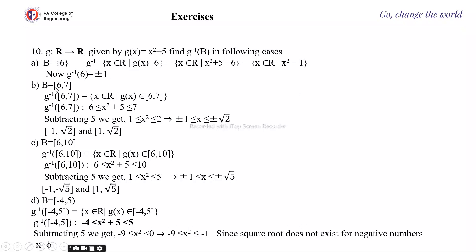Next, when b is the interval [6, 7], this is the set of x belonging to ℝ such that g(x) belongs to [6, 7], that is 6 ≤ x² + 5 ≤ 7. Subtracting 5 from the whole expression to cancel the 5, we get 1 ≤ x² ≤ 2.